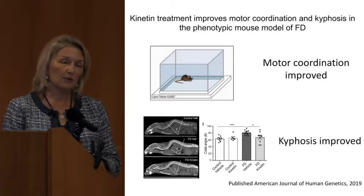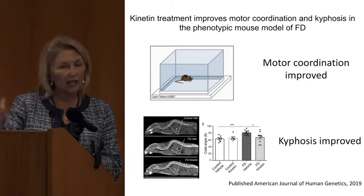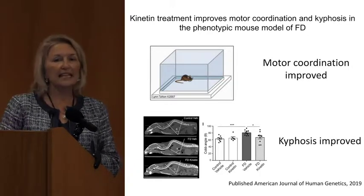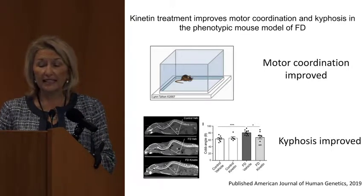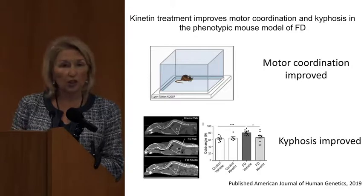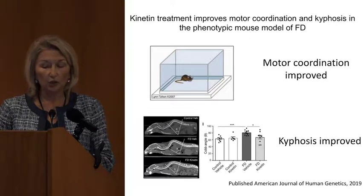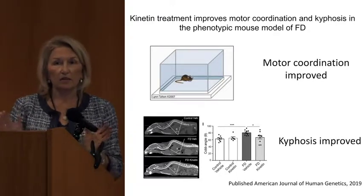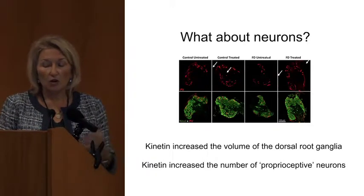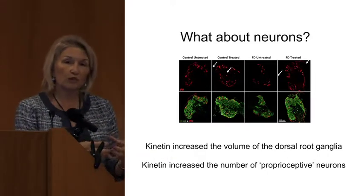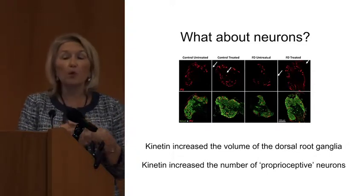We were really pleased with these results because this was really the first time that we were ever able to show that if you can change splicing and increase the amount of protein, we would see the symptoms of FD in these mice get better. We did various testing on these mice to assess motor coordination. You can see in this picture: this is a control at the top, this is an untreated mouse, and this is a treated mouse. It was able to rescue some of the kyphosis as well. We also looked at the neurons — Kinetin was able to increase the volume of the dorsal root ganglia and also increase the number of proprioceptive neurons.